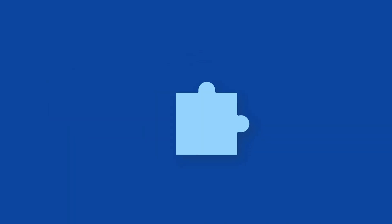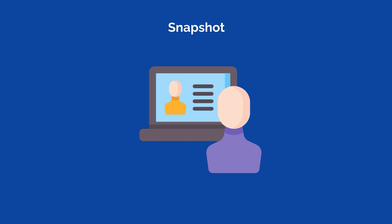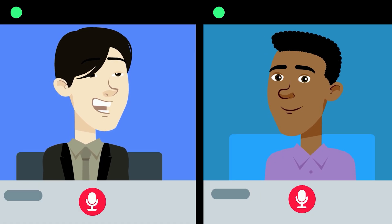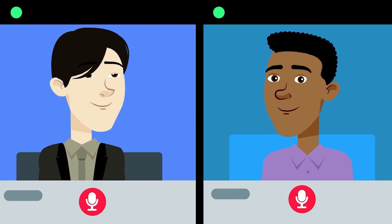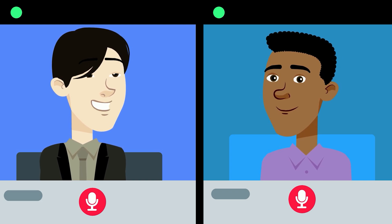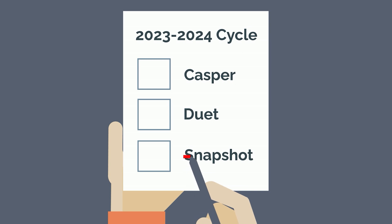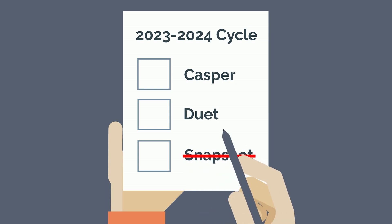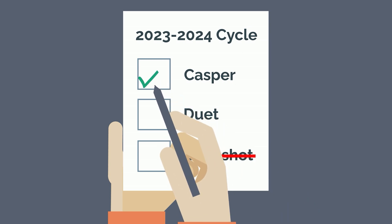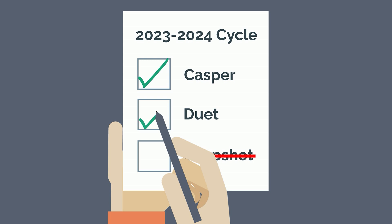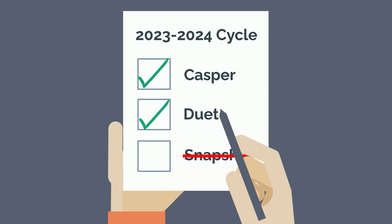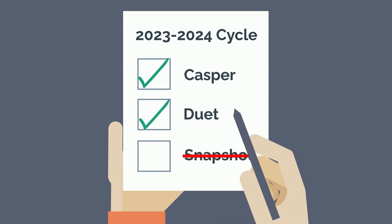The second big change involves another component of Acuity Insights, which is Snapshot. Snapshot is a short, one-way interview that assesses an applicant's people skills by asking them why they want to pursue medicine. This year, Snapshot will no longer be a requirement for anyone applying to the 2023-24 cycle. However, Casper and Duet may still be required for certain schools, and you should always check each school's application requirements ahead of time.